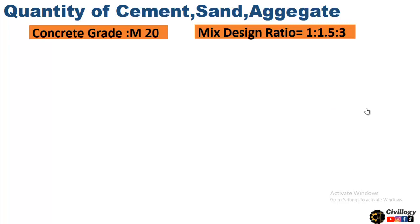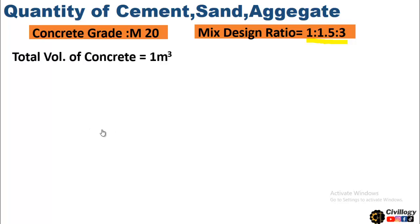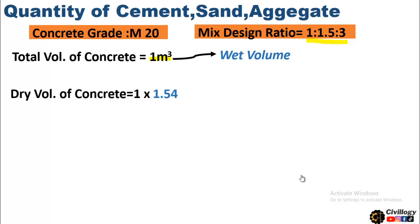The concrete grade is M20 and its ratio is 1:1.5:3. The total volume of concrete required is 1 cubic meter. This is the wet volume of the concrete — that is, concrete when it gets hard and the formwork is removed. But the ingredients we take before mixing are in dry form, so we need the dry volume of concrete, which is equal to 1.54 times the wet volume.